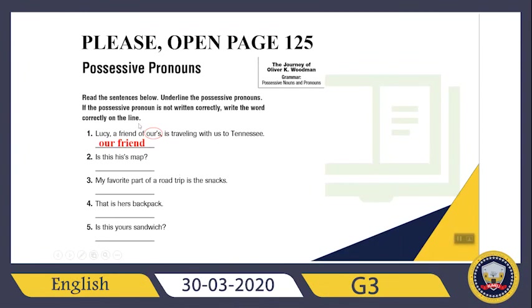Let's check the second sentence together: Is this his's map? His map — is this correct? No. So I need to circle or underline it. How can I write it? Is this his map? I don't need an apostrophe and 's'. 'His' will be enough — his map.